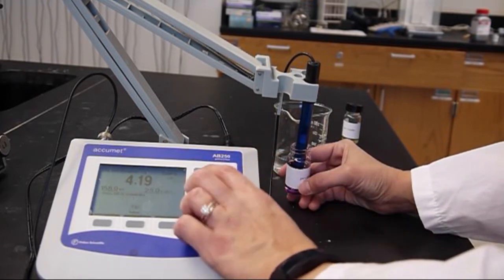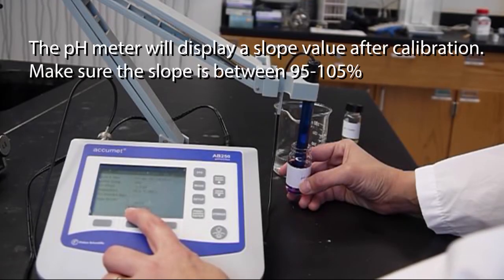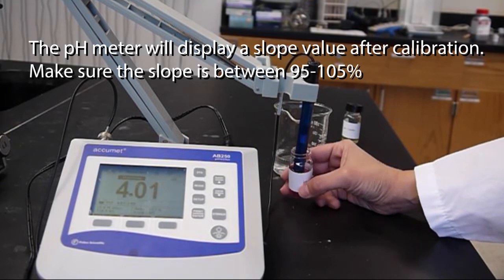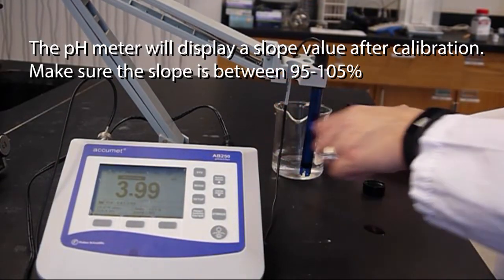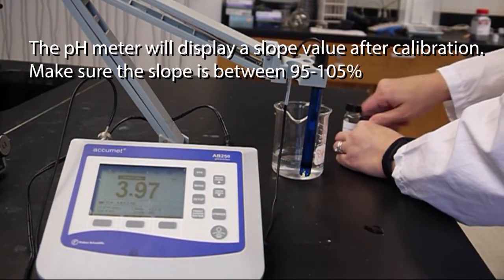So it says stable, so press STD. Now we have calibrated with a pH 4 and a pH 7 buffer solution. So our pH meter is ready to go.